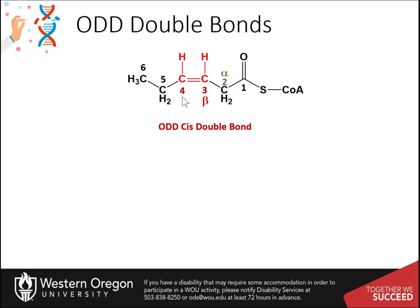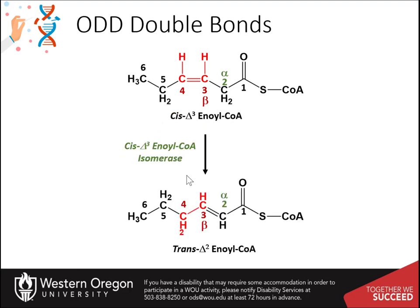When it reaches this state, the acyl-CoA dehydrogenase will no longer recognize this as a substrate and will be unable to create the double bond between the two and three position. Instead, an isomerase enzyme is required to shift the cis-3-4 double bond into a trans-2-3 double bond. This isomerase is called cis-delta-3 enoyl-CoA isomerase, named for the substrate that it recognizes, and it converts the cis-delta-3 double bond to the trans-delta-2 double bond.